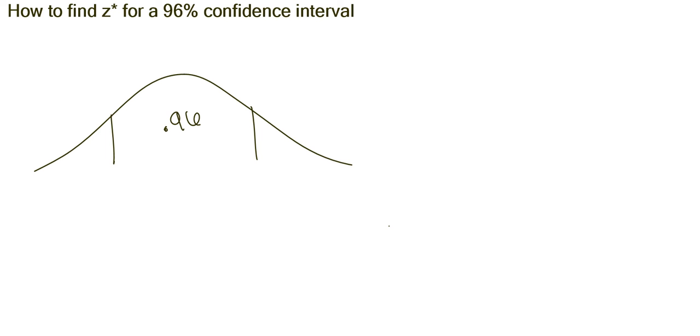So 96% means put .96 in the middle. Then figure out how much is going to be in each tail. So if I do 1 minus .96, that's going to give me .04. But that's both tails combined. So if I take that and divide by 2, I get .02. So that would be in one tail. So I have .02 in this tail, I have .02 in this tail, and I'm looking for this z star value that makes this dividing line right here.